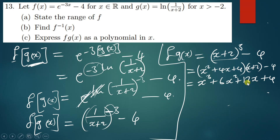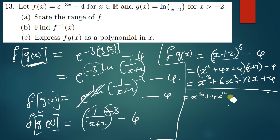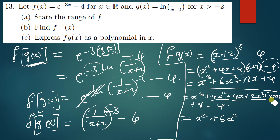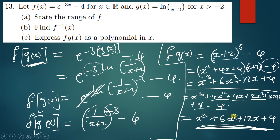Let's verify by expanding together: x times x squared gives x cubed; x times 4x gives 4x squared; x times 4 gives 4x. Then 2 times x squared gives 2x squared; 2 times 4x gives 8x; then minus 4x and minus 4. Collecting terms: x cubed, 4x squared plus 2x squared gives 6x squared, 4x plus 8x minus 4x gives 12x, and the constant 8 minus 4 gives positive 4.